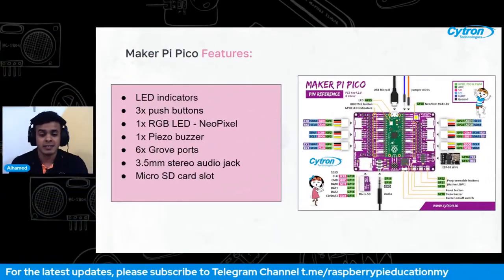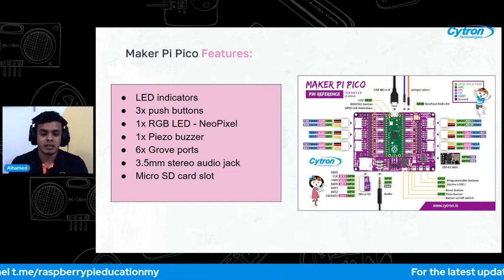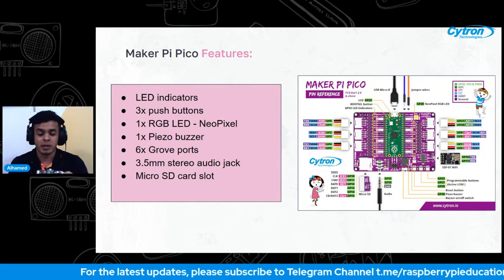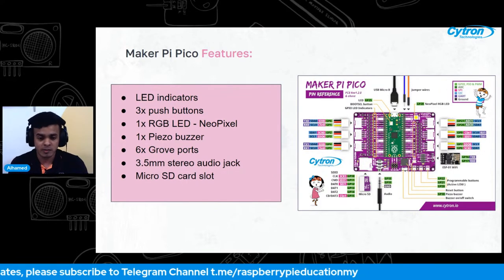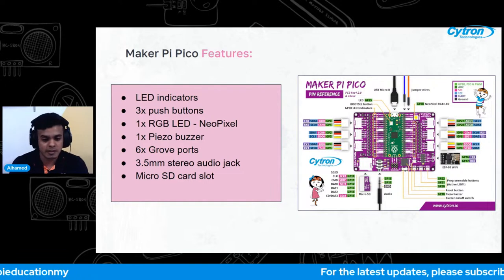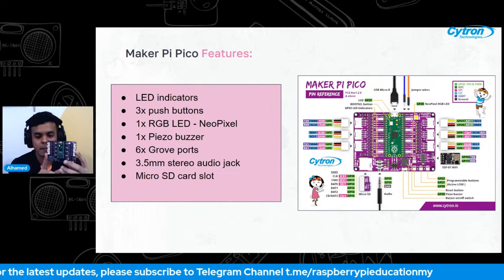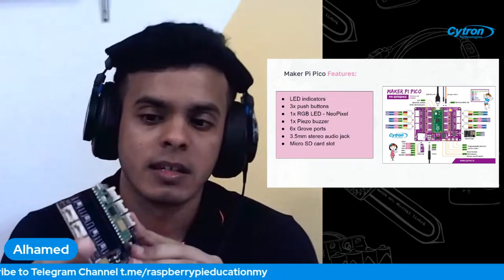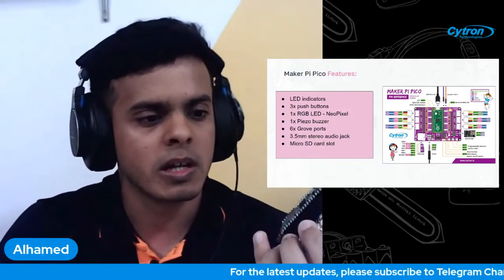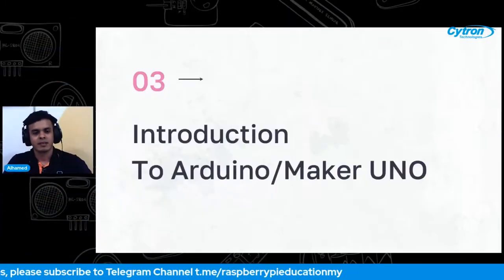The Maker Pi Pico also features an RGB LED that can produce different colors, allowing you to create nice visual effects. You can control the colors and brightness, making it perfect for colorful light projects. There's also a buzzer that can produce different sounds when activated — like a mini speaker to play melodies and sound effects. Additionally, there are six Grove ports on the sides, which make connecting components and sensors much easier. These are among the most important features of the Maker Pi Pico.